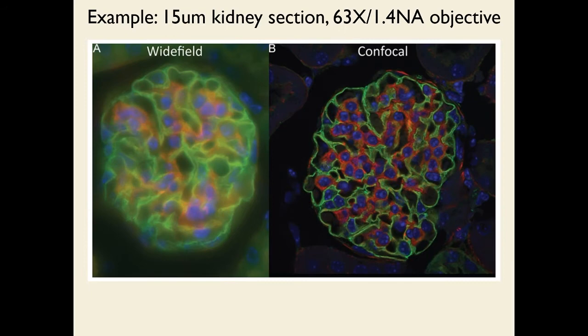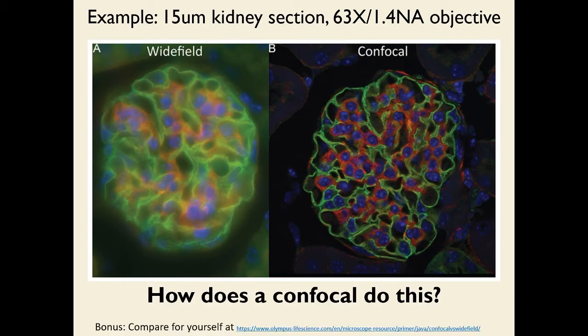To illustrate this, here is a 15-micron kidney section imaged with a 63x 1.4 NA objective on two different microscopes. On the left is the result from a wide-field microscope, and on the right from a confocal microscope. The confocal image on the right looks much crisper because it lacks the out-of-focus blurriness that contributes to the wide-field image.